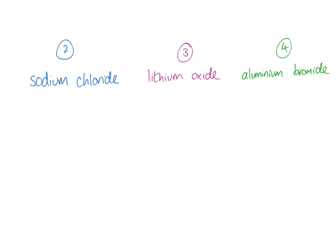For question two, sodium chloride: sodium is Na, chloride is Cl. The valencies are one and one, because sodium is in group one and chlorine is in group seven. Swap and drop gives Na1Cl1, then ignore the ones to get NaCl.